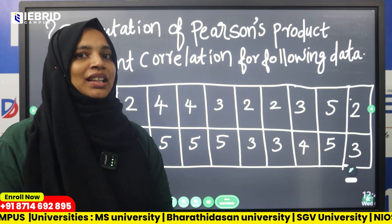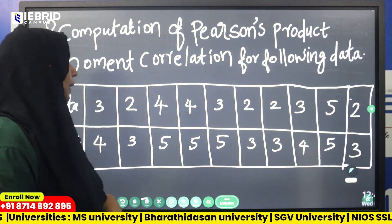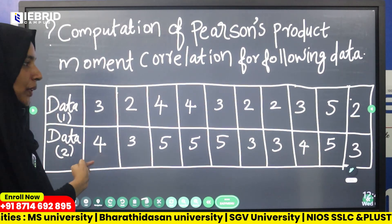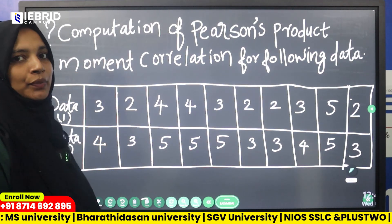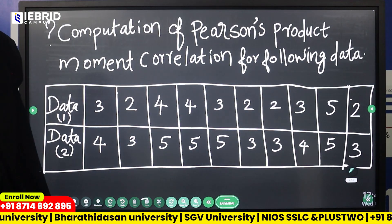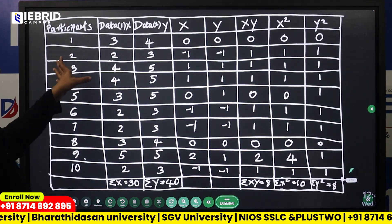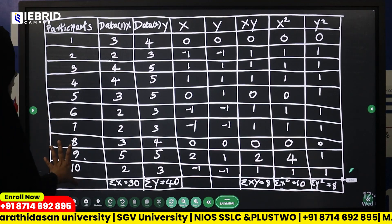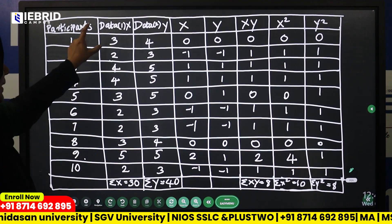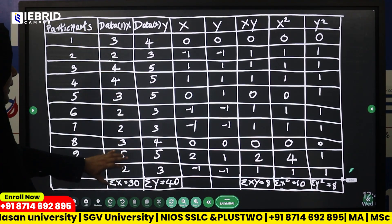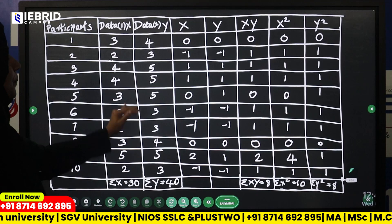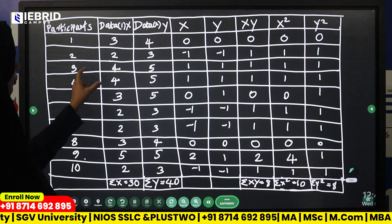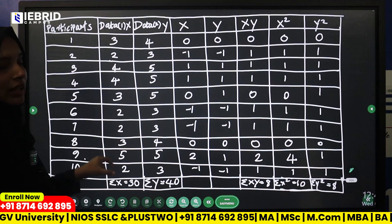We want Data 1 and Data 2. The total number of participants is 10. We call these Data 1 and Data 2. Now, what is mean? Data 1 is represented as x. What is mean? Mean is summation x divided by n.